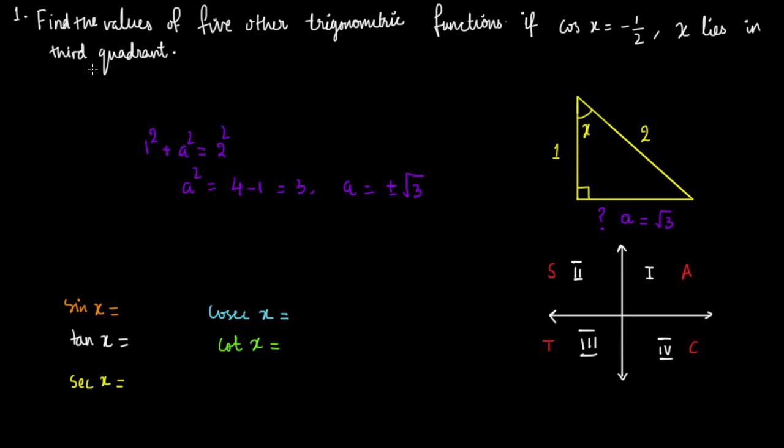So apart from tan x and cot x, because cot x is just a reciprocal of tan x, apart from these two functions, the values of other functions would be negative in third quadrant.